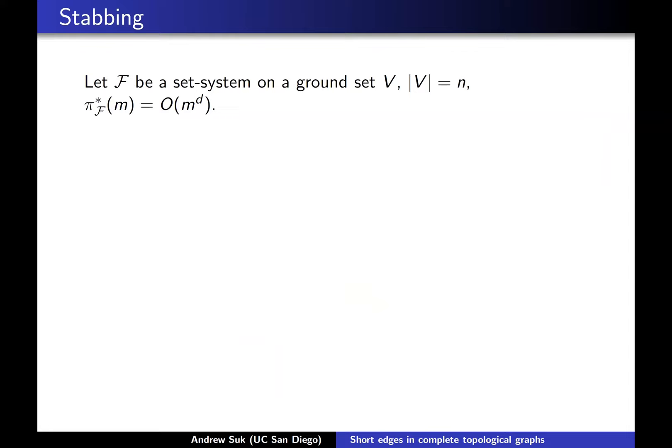We'll focus on set systems with well-behaved dual shatter functions — by well-behaved I mean that it grows polynomially in m. Roughly speaking, this d here is basically the dual VC dimension, and the dual VC dimension is closely related to VC dimension — not exactly the same, but one being bounded implies the other is bounded.